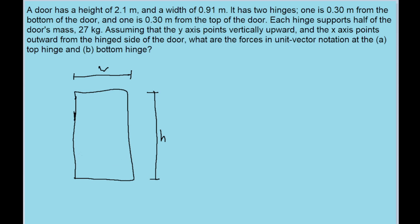And there are two hinges here. Both of them have the exact same distance from their closest edge of the door. I'm going to call that little d. And we're also told what coordinate system to use. The y-axis just points upwards, and the x-axis points outwards from the hinge side of the door. We're also given the mass of the door.